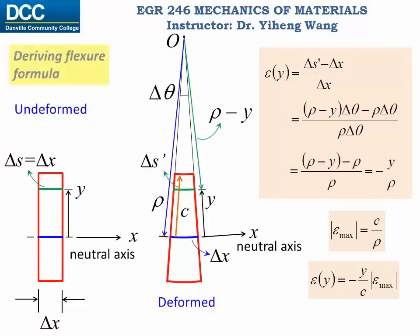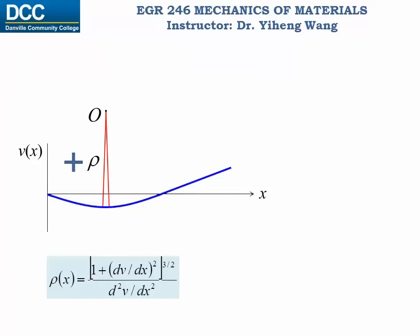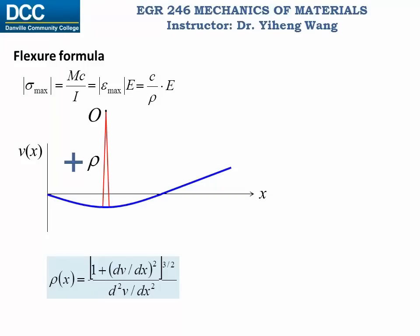If you recall, when we were deriving the flexural formula, we came across the relation that epsilon maximum, the maximum normal strain caused by the bending moment, equals c over rho, where c is the maximum perpendicular distance from the neutral axis to the edge of the member, and rho is the radius of curvature at that location. Using the flexural formula relating normal stress sigma to bending moment M, and applying Hooke's law with E as Young's modulus, we can derive that 1 over rho equals M, the bending moment, over EI.